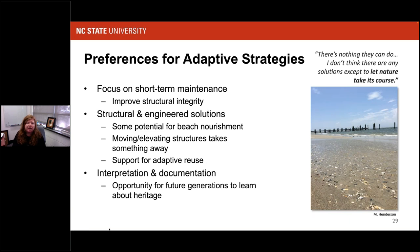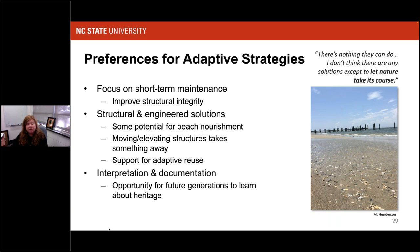When asked about preferences for adaptation strategies, they really wanted to focus on short-term maintenance to improve structural integrity for future storms. But the question that remains is: for how long do you continue to invest? Another preference was for structural or engineered solutions — there's some potential for beach nourishment, although the National Park Service tries to avoid that due to their preference for natural processes. Moving or elevating structures was found to take something away from them, but there is some support for adaptive reuse — a third party coming in and utilizing the building so that it's in use and can be maintained into the future.